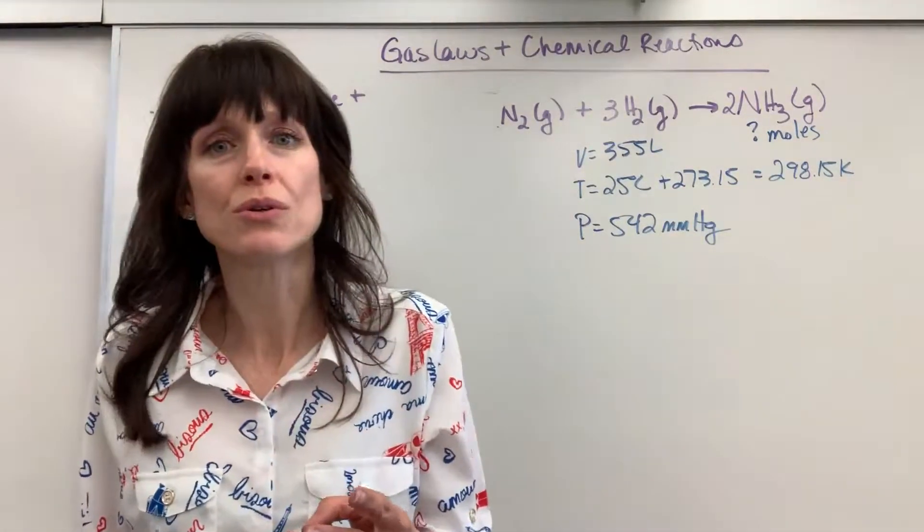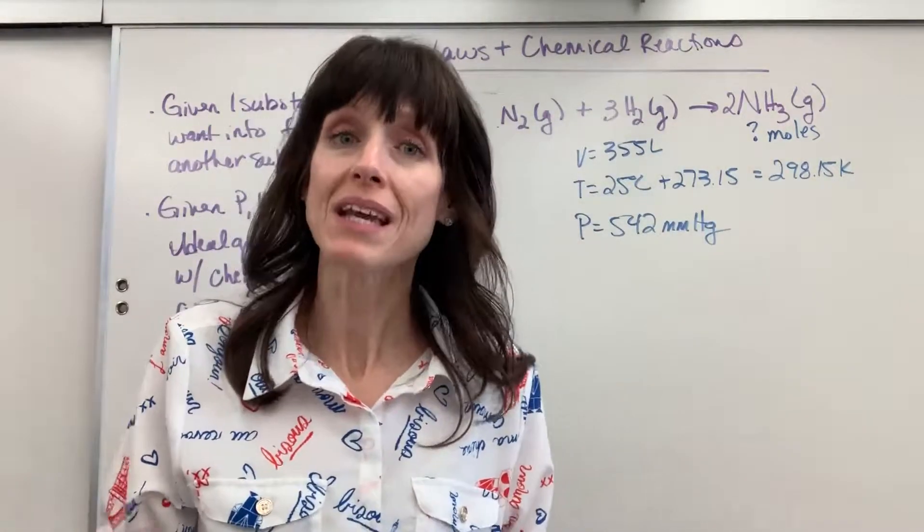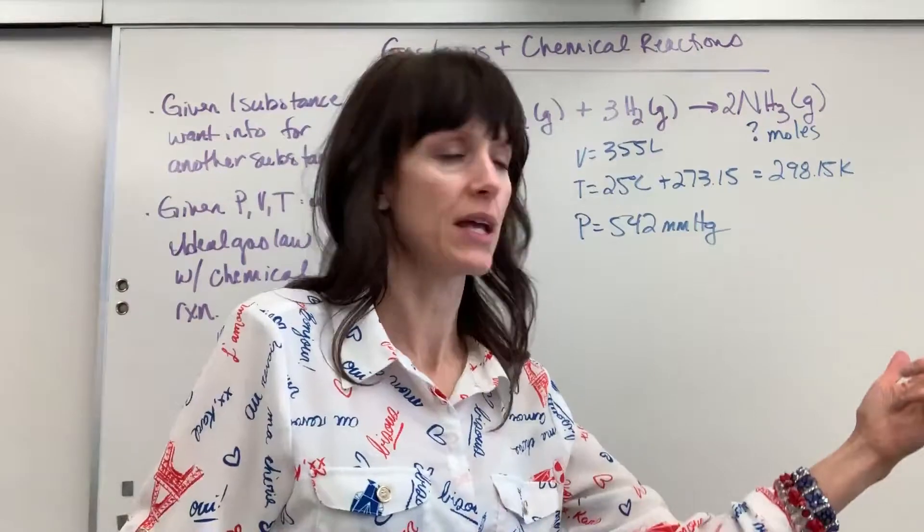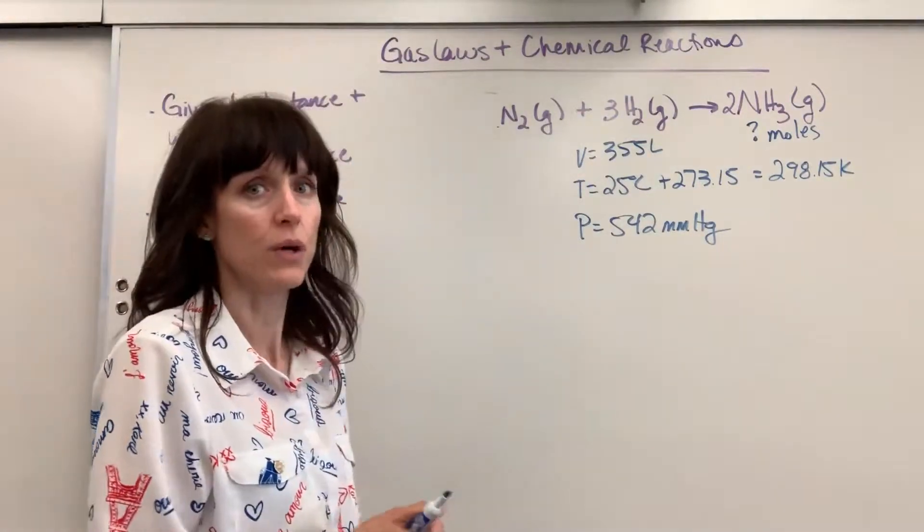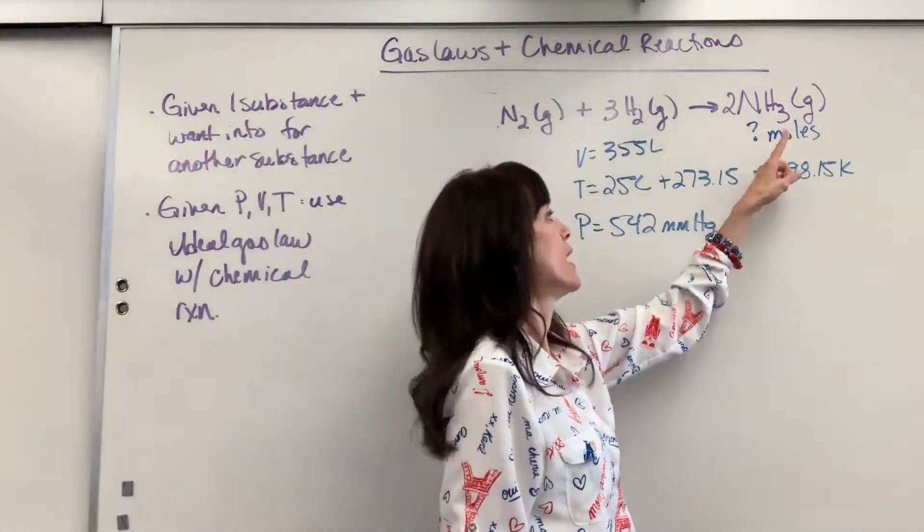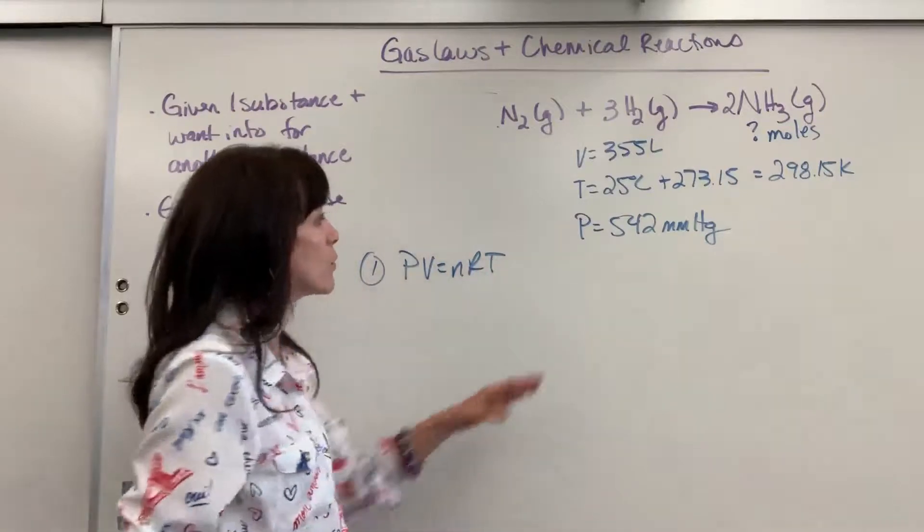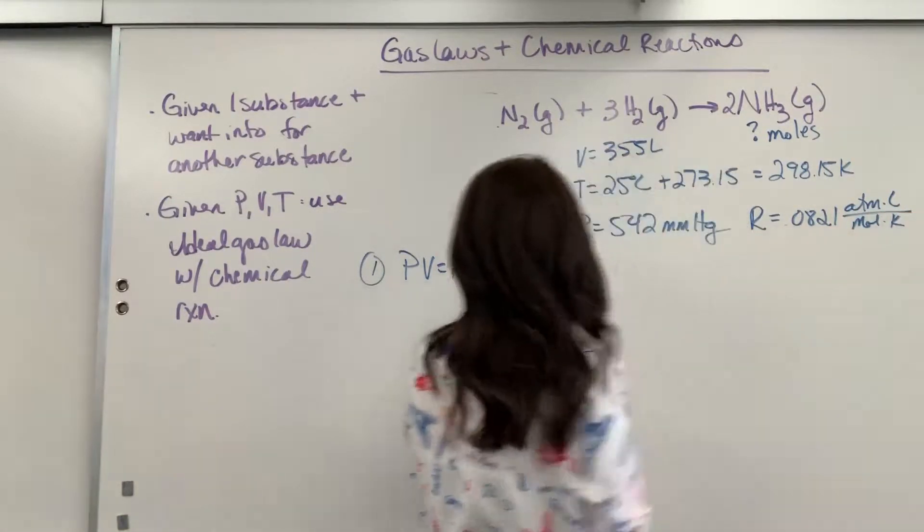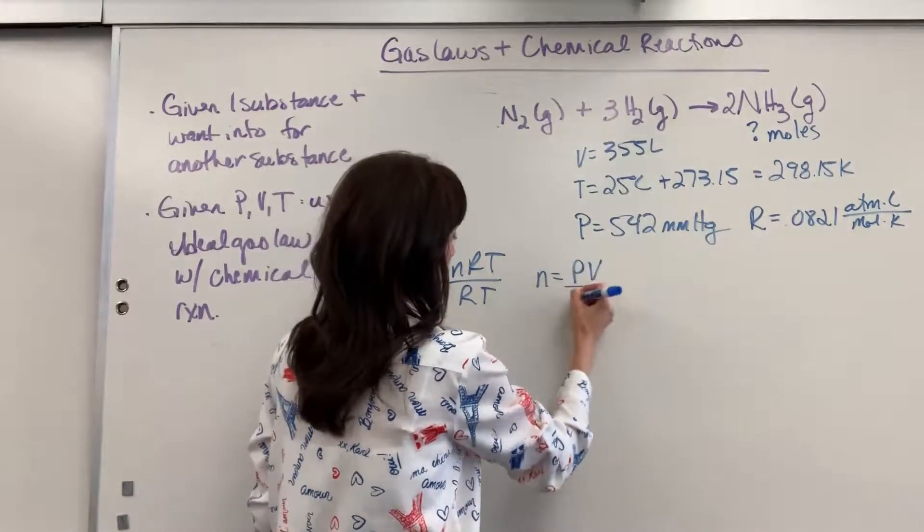Number two was super poignant. They want amount of substance—moles—but they give me all this pressure, temperature, volume information, which means we're going to use the ideal gas law. So number one, we're going to use the ideal gas law to find moles of hydrogen. From there, we'll do the molar ratio, walk the bridge, and find the moles of ammonia. PV equals NRT. R is 0.0821 atm times liter divided by mole times Kelvin. Let's solve for moles. Divide both sides by RT and we get N equals PV over RT.